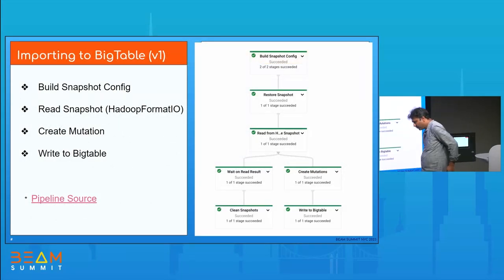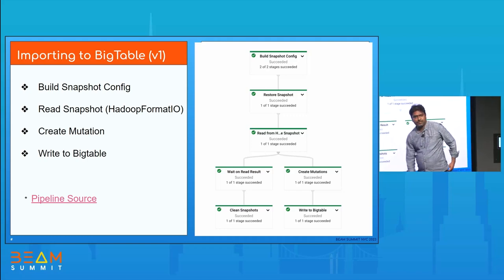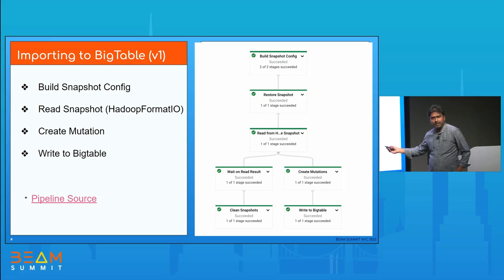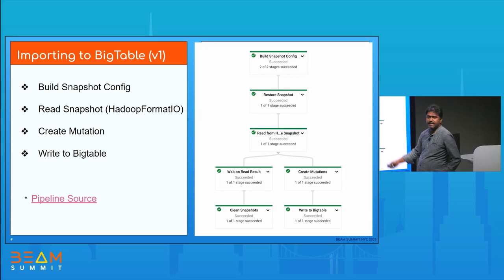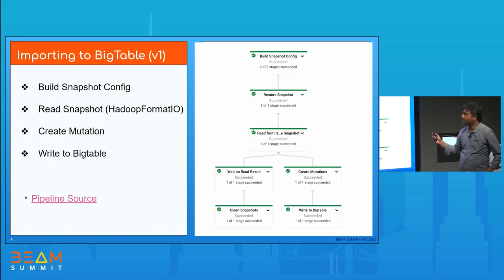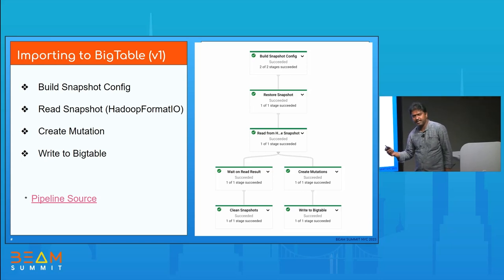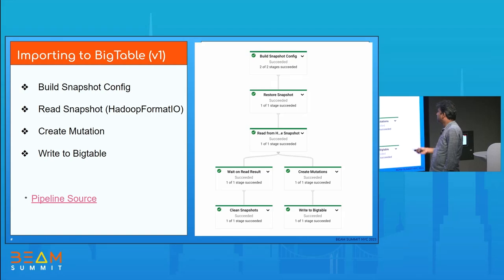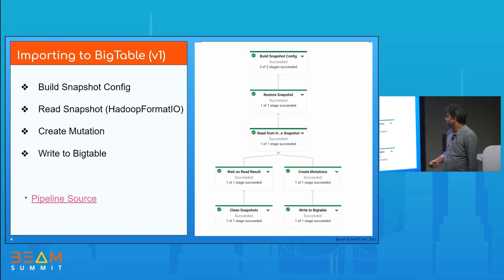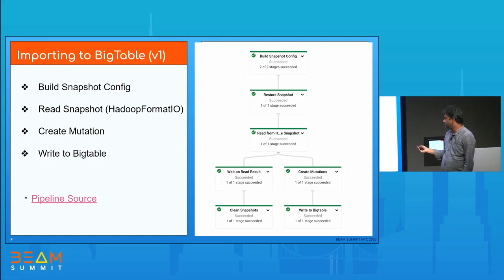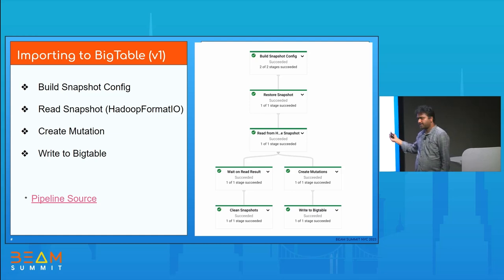Our first version of the pipeline uses a snapshot config that tells us where the source data is located on Google Cloud Storage and what the target Bigtable instance is. Once the snapshot config is set, we restore the snapshot to a temporary directory so we don't touch the original snapshot during processing. We then read from that snapshot using Hadoop Format IO, convert the data into mutations for Bigtable, and write to Bigtable. Afterward, we clean up the restored snapshot.